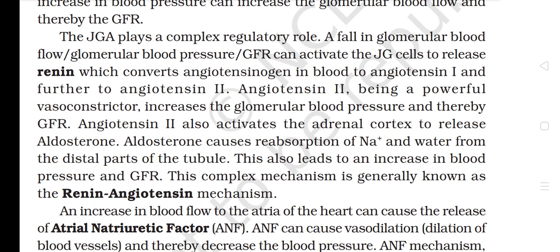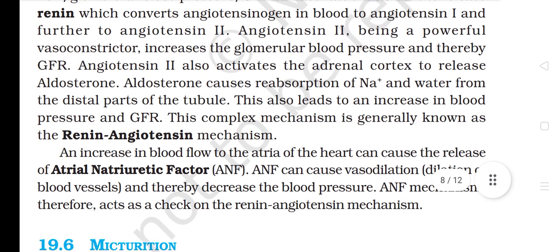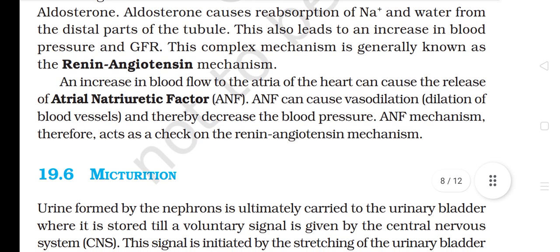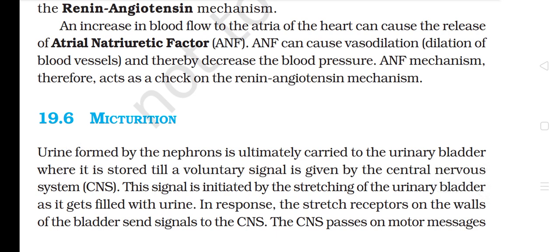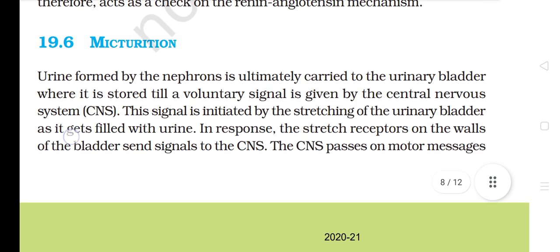The JGA plays a complex regulatory role. A fall in glomerular blood flow or GFR can activate JGA cells to release renin, which converts angiotensinogen in blood to angiotensin I and further to angiotensin II. Angiotensin II, being a powerful vasoconstrictor, increases the glomerular blood pressure and thereby GFR. Angiotensin II also activates the adrenal cortex to release aldosterone, which causes reabsorption of Na+ and water from the distal parts of the tubule, further increasing blood pressure and GFR. This is known as the renin-angiotensin mechanism. An increase in blood flow to the right atrium of the heart can cause release of atrial natriuretic factor (ANF), which causes vasodilation and thereby decreases blood pressure — ANF acts as a check on the renin-angiotensin mechanism.